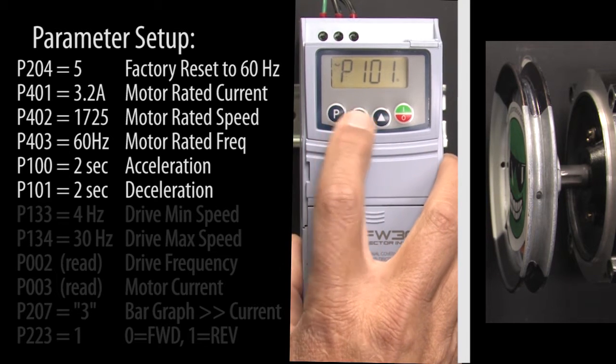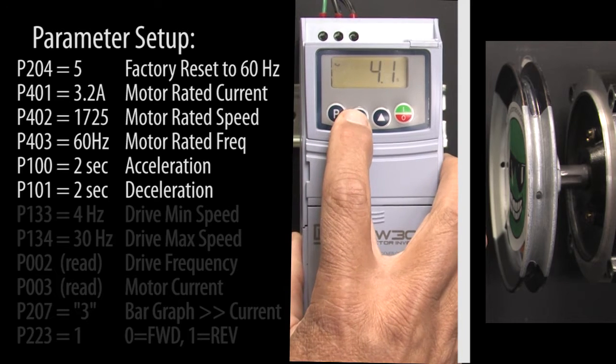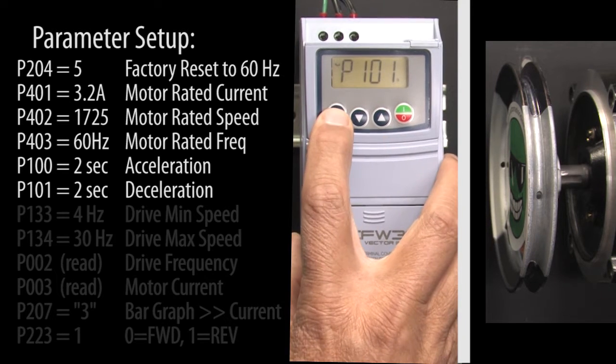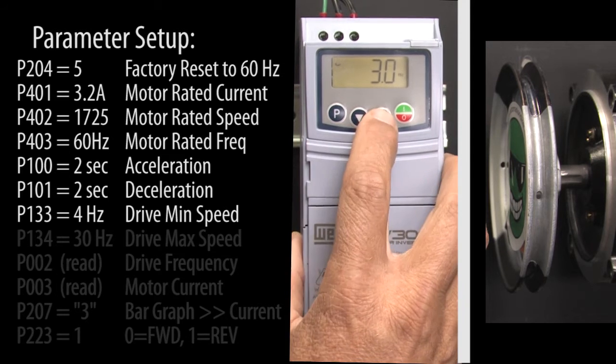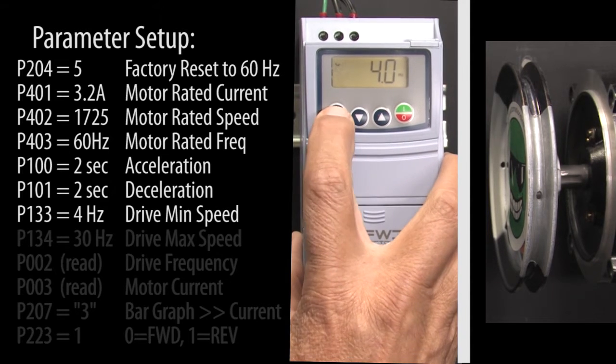Scroll to the next parameter on our list, hit P and change the deceleration to 2 seconds and hit P to accept that. Scroll to the min speed parameter, let's make that 4 Hz. Hit P to accept that.